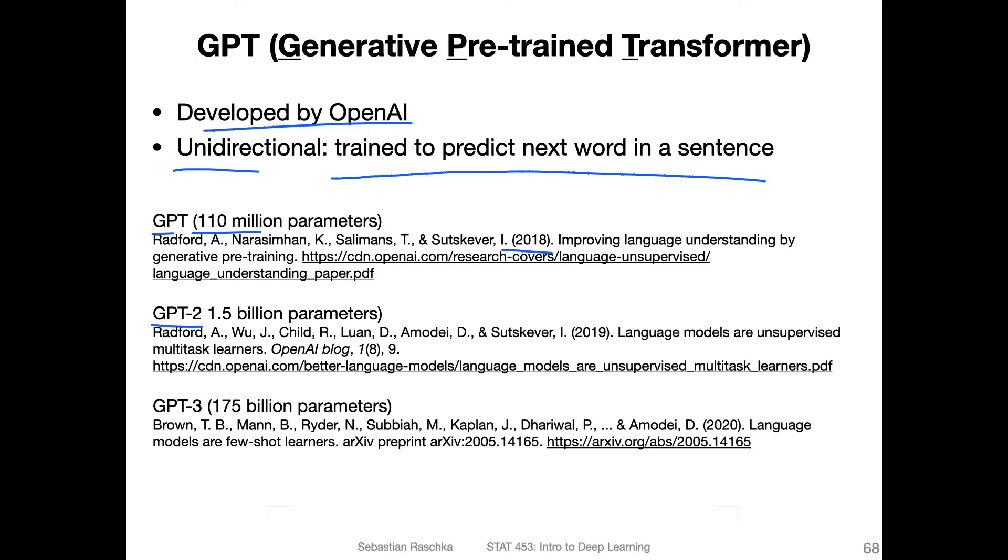There's GPT version two, with 1.5 billion parameters, more than 10 times larger, which came out in 2019. And then GPT-3 with 175 billion parameters in 2020. In this video, we will focus on GPT version one, and I will have separate videos on version two and version three.